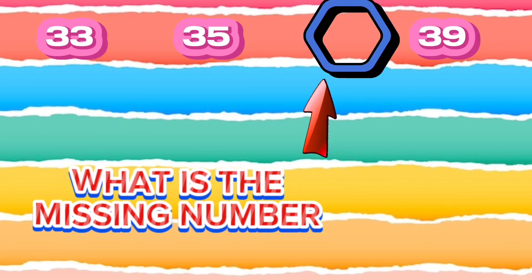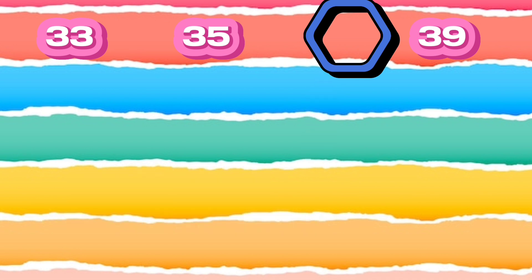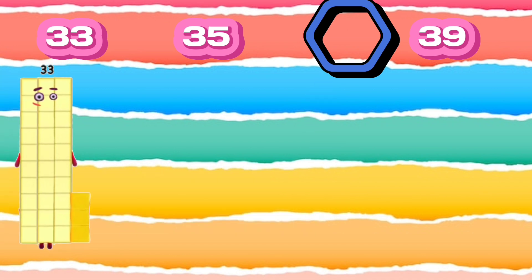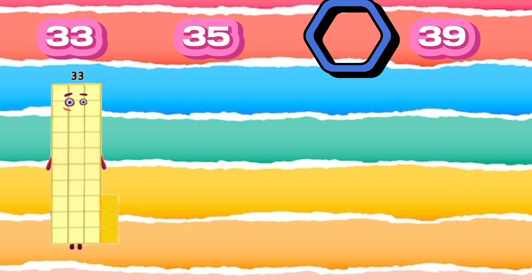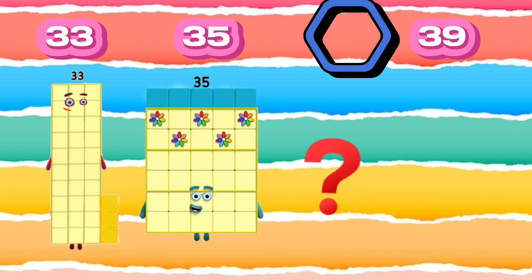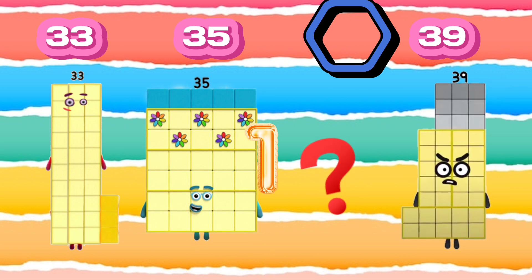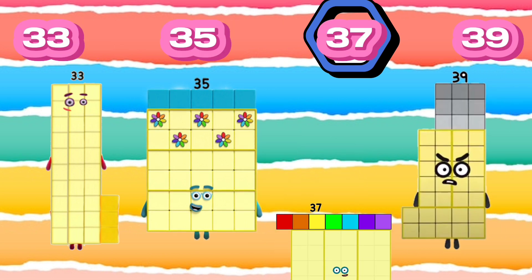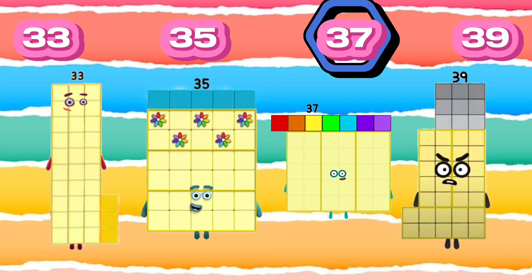What is the missing number? 33, 35, 39. The missing number is 37. The number sequence is 33, 35, 37, 39.